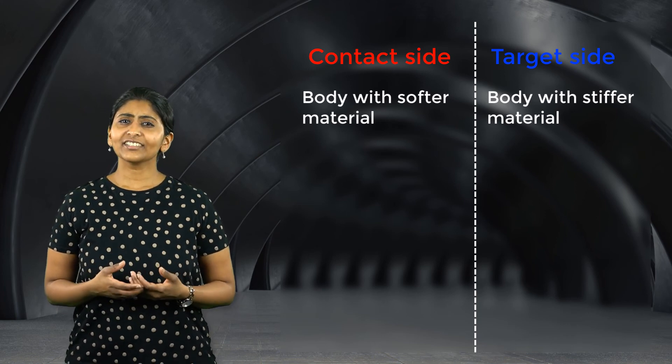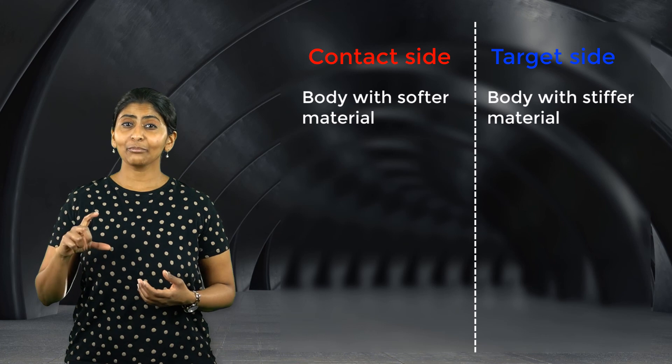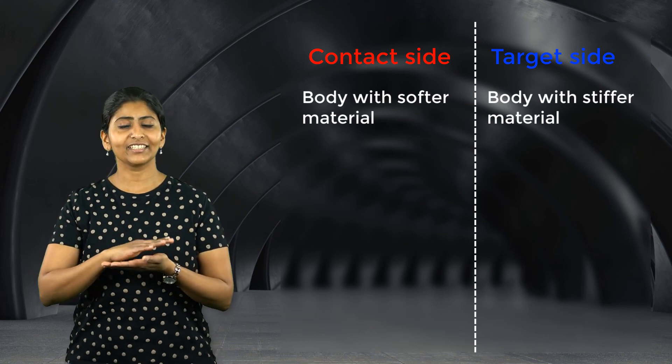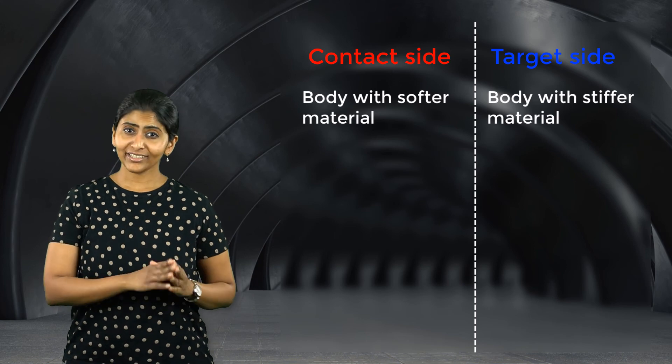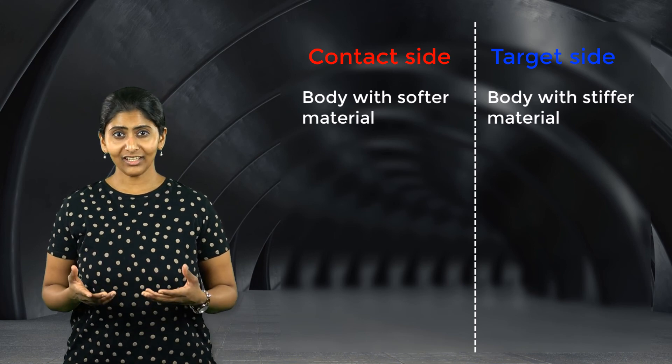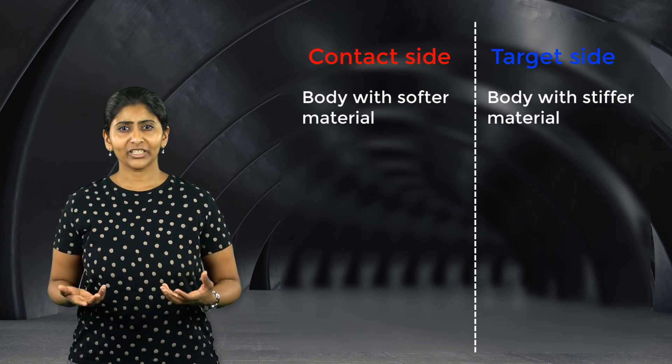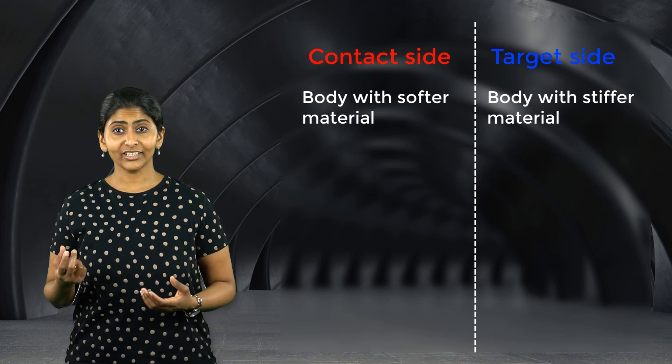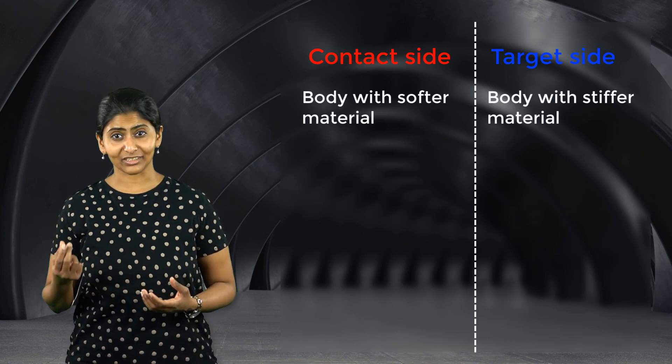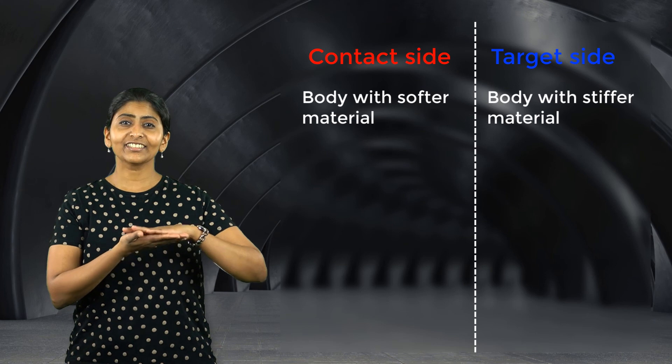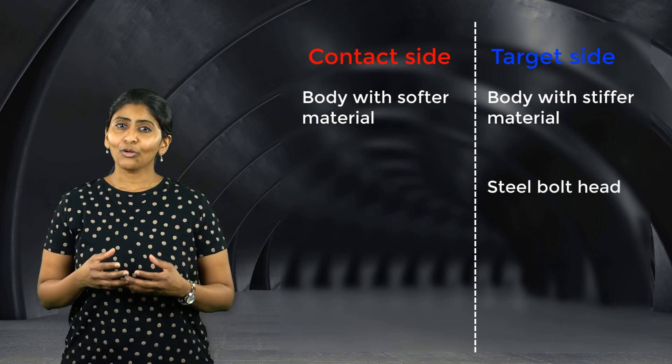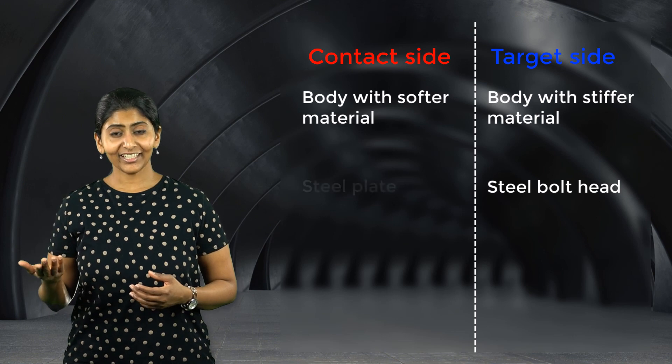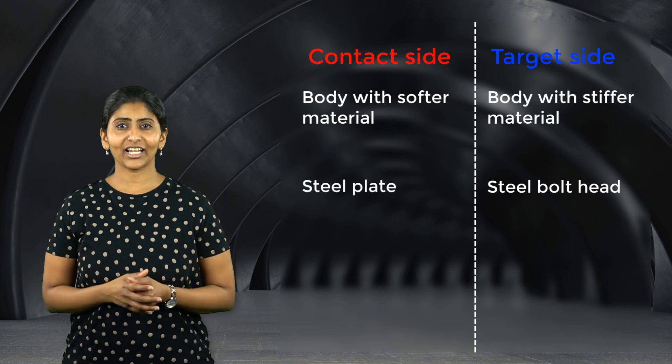For example, consider a steel bolt clamping together two thin steel plates. Although both the bolts and the plates are made of steel, due to different geometries, the steel bolt head will most likely be stiffer than the thin steel plate it is touching. So, the bolt head will be the target side and the plate will be the contact side.